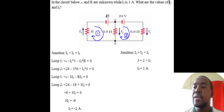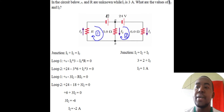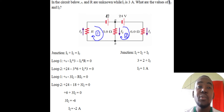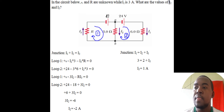Simplifying loop 1: epsilon minus 3·I2 minus R·I3 = 0. For loop 2: 24 minus 18 plus 3·I2 = 0, which gives 6 plus 3·I2 = 0, so 3·I2 = negative 6, and I2 = negative 2 amps. The negative simply means I2's actual direction is opposite to what we assumed — so in the final answer, I2 = 2 amps.